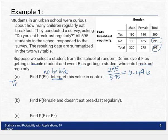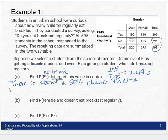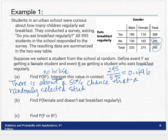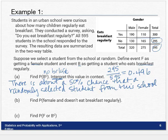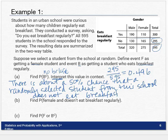Now it says, interpret this value in context. Here's how it would look: There is about a 50% chance that a randomly selected student from this school does not eat breakfast regularly. That's how you would interpret a probability. Notice I included 'randomly selected,' and then this part is context. A lot of context.